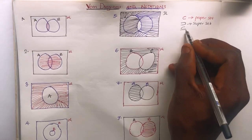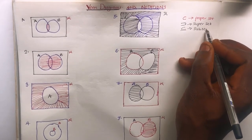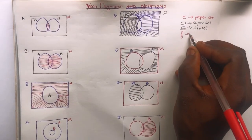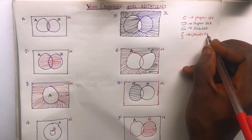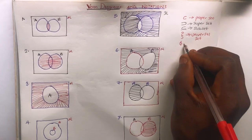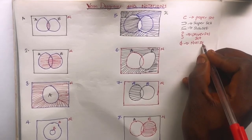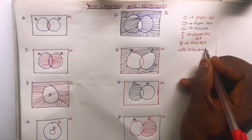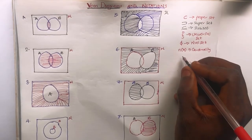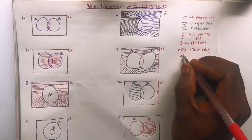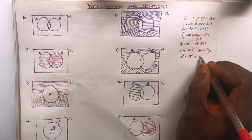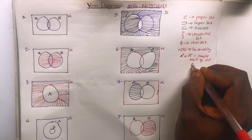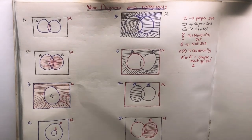If you have something like this, it denotes a subset. Then if you have something like this, it represents the universal set. If you have something like this, it denotes the null set. If you have something like this — cardinality of A — this sign denotes cardinality. And if you have a bar on top of A, that represents the complement of set A.